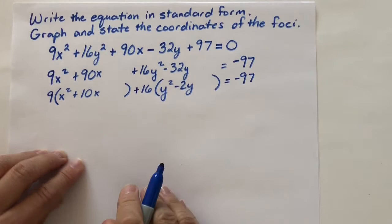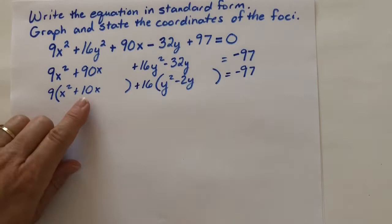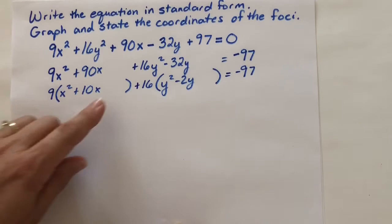And notice I'm leaving some space because we need to put in the number that will complete the square. Now notice within the parentheses, that coefficient of the x² is a 1. So let's do our completing the square. We'll take half of 10. Half of 10 is 5. 5² is 25. So we need a 25 right here.